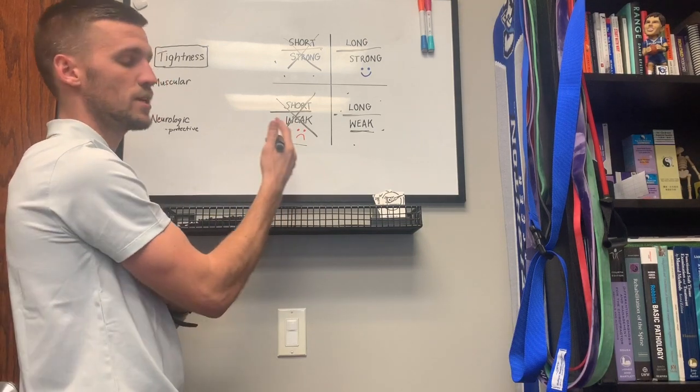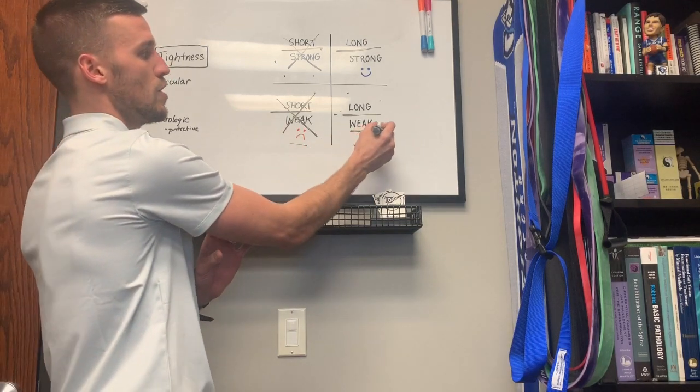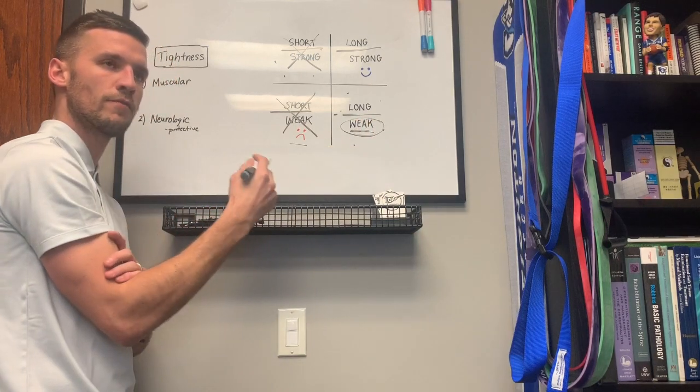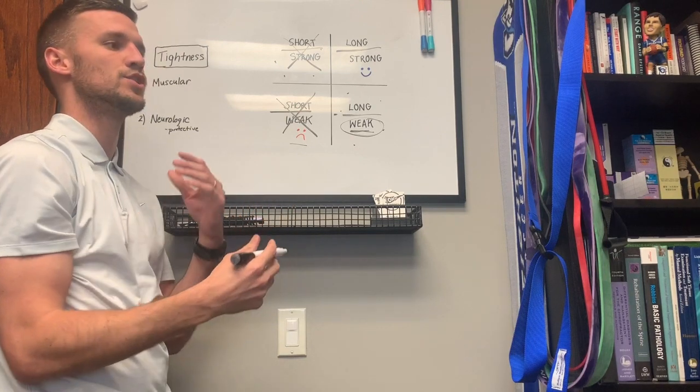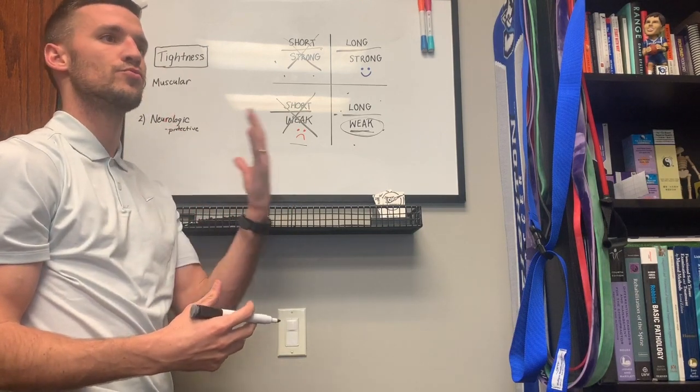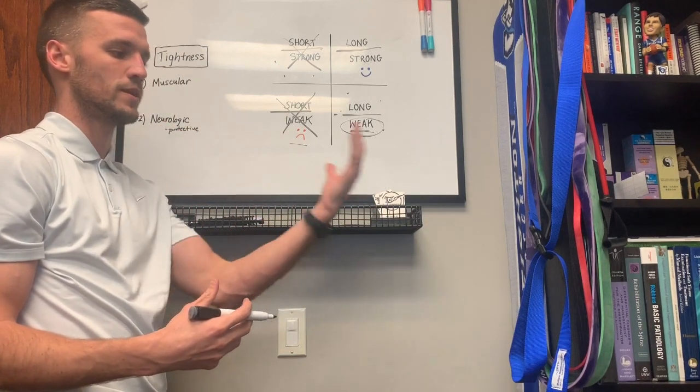So I recommended to her she stop stretching her hamstrings because it's not going to do her much good and she's going to use that time to actually do more loading. And for hamstrings and for many muscle groups, she actually needs eccentric loading, meaning she needs to strengthen that muscle while the muscle is lengthening.